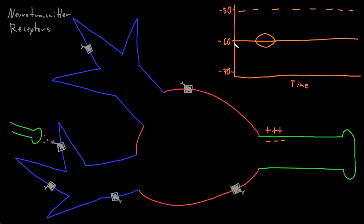An equilibrium potential is the membrane potential at which a certain ion will have balanced electrical and diffusion forces, so that even if there are open channels, there is no net movement of that ion. If the channel is a sodium channel or a calcium channel, opening of that channel will usually cause a depolarization — an excitatory potential — because these cations will usually flow into the neuron, bringing positive charges into the negative inside of the neuron. For sodium and calcium, both their electrical force and their diffusion force are trying to drive them into the neuron if there are open channels through which they can pass.